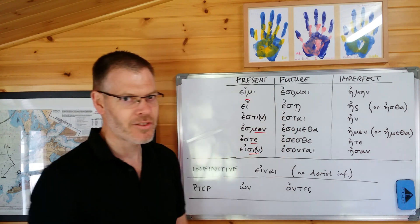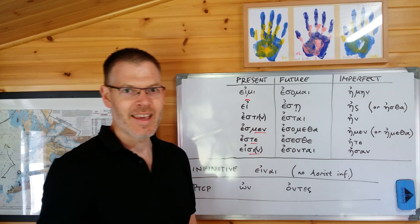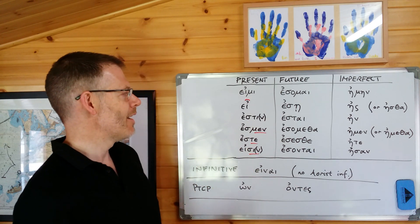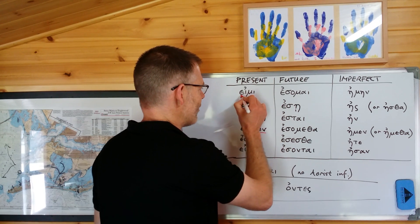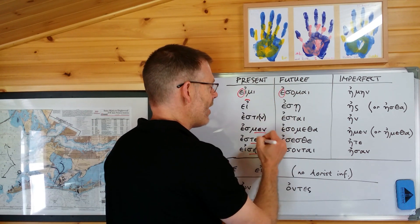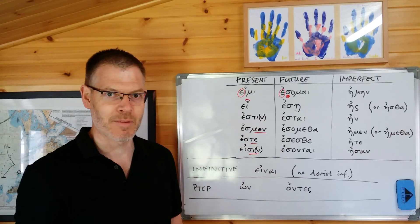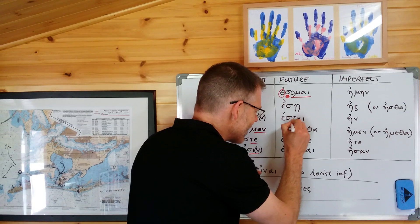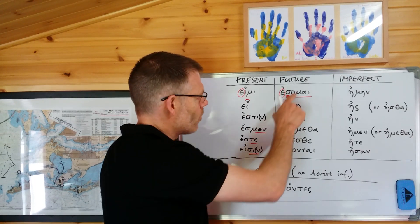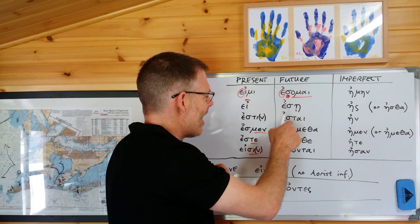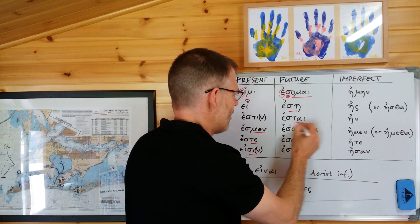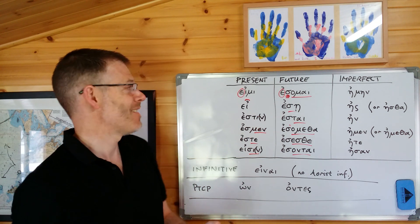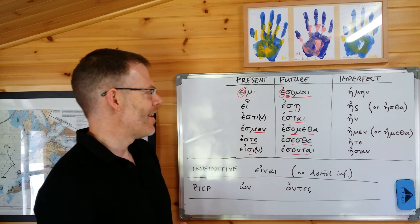The future — 'I will be' — the great news here is that the whole package is almost identical to the form you just learned in the previous section. With λύομαι it's λύομαι, λύῃ, λύεται. Well here, it's ἔσομαι, ἔσῃ, ἔσται, ἐσόμεθα, ἔσεσθε, ἔσονται. But that's not hard to learn, is it? So once you've learned λύομαι in the present tense, you've got ἔσομαι in the future tense.